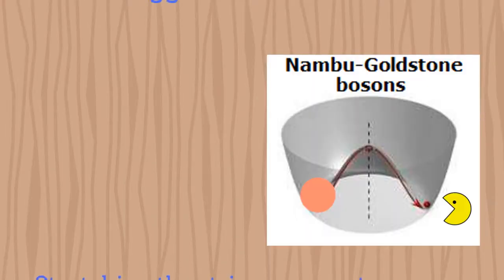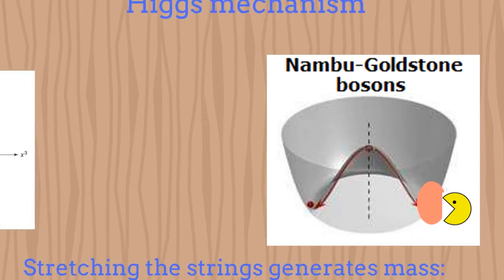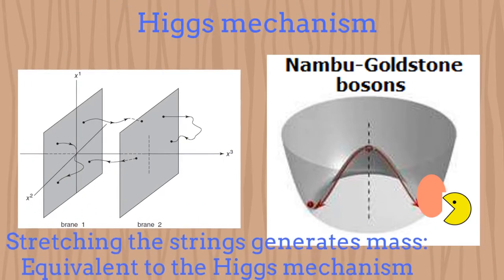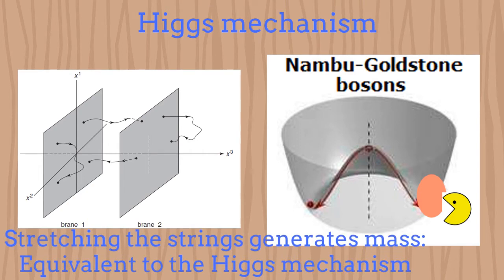The tension of the string then generates its mass. Actually, the Higgs mechanism in string theory appears when we stretch an open string which is attached to some different ends. We will discuss more about this aspect in future episodes.